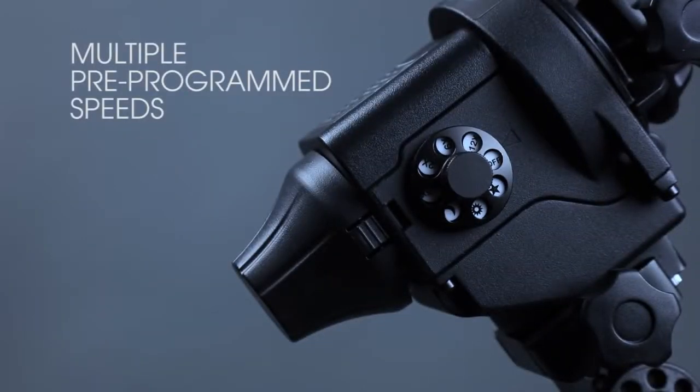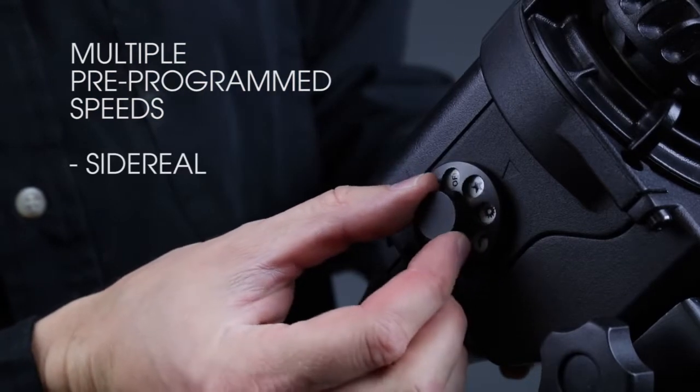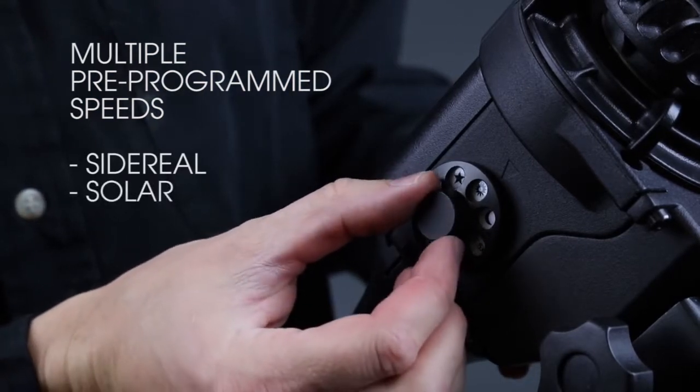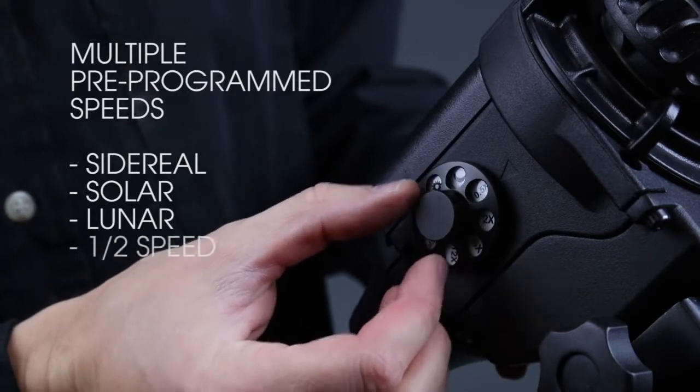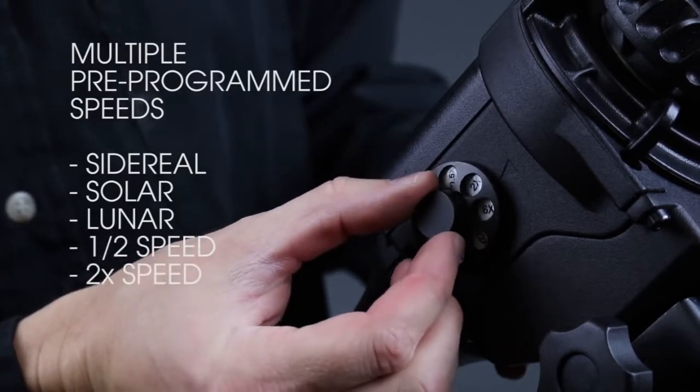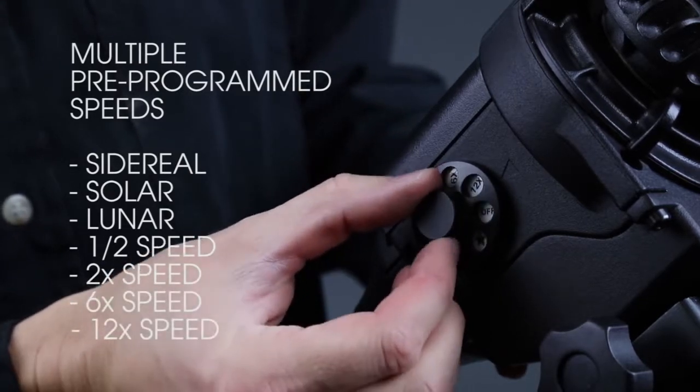The StarAdventure has seven distinct tracking modes. Sidereal mode, indicated by the star icon, is used for photographing stars, the Milky Way, and any deep sky objects. The Sun icon is used for solar photography and the Moon icon for lunar photography. The remaining four modes are designed for shooting time lapses of the night sky by giving users half speed, two times, six times, or twelve times the normal tracking speed.